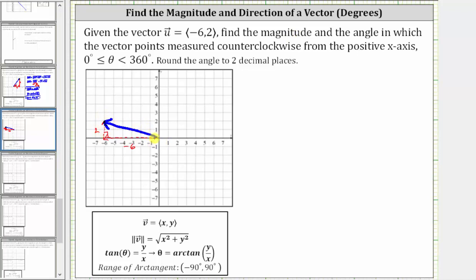Notice how this is the hypotenuse of the right triangle, as well as the direction of the vector, which again is the angle measured from the positive x-axis to the vector, this angle here.